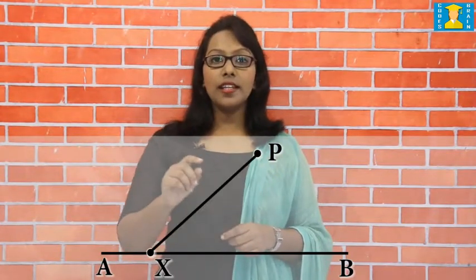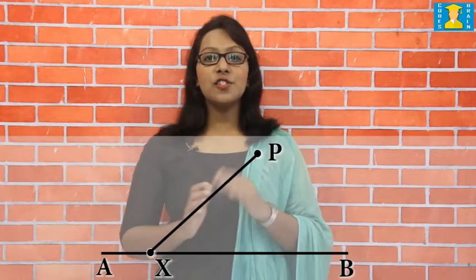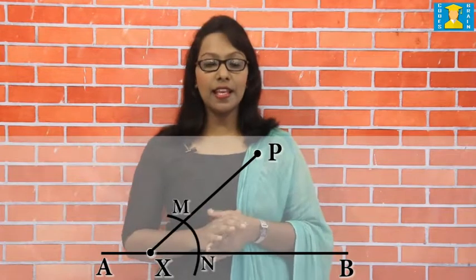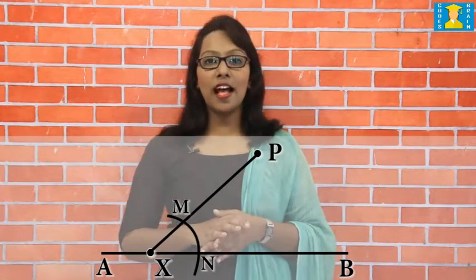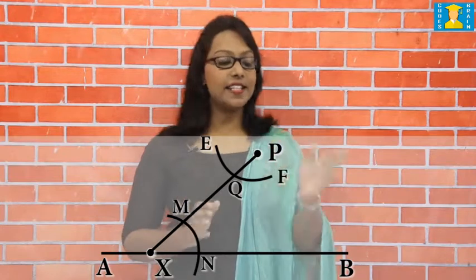Now let's see the construction through these steps. First step: choose any point X on the line segment AB and join it to point P as shown in this figure. Step 2: with X as center and any suitable radius, draw an arc cutting the line segment PX at point M and at point R as shown in that figure.